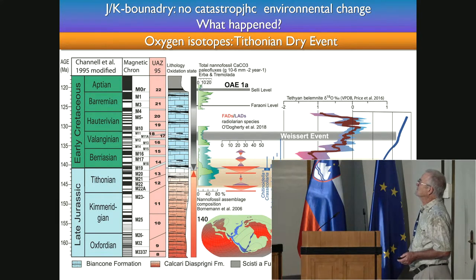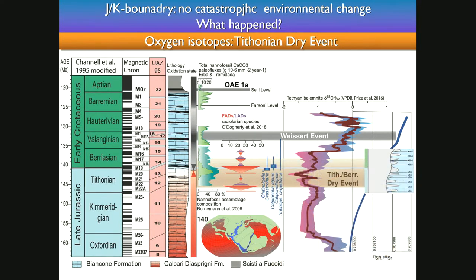This dry event will be one of the elements we use to interpret the whole situation and change. I have put the sea level curve from HAQQ 2014, and you can see that there are some major short-term regressions during the late Tithonian and during the early Berriasian, which could indicate that there is some mountain ice on Antarctica and Australia, as we will see later.